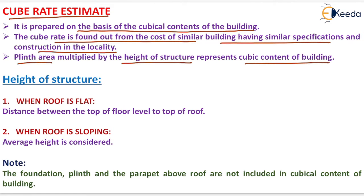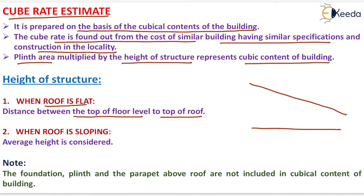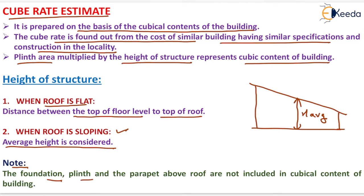The height of the structure depends on the type of roof. When the roof is flat, the distance from the top of the floor level to the top of the roof is taken as the height. When the roof is sloping, the average height is considered. Note that the foundation plinth and the parapet above the roof are not included in the cubical content of the building.